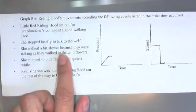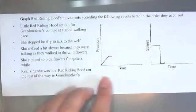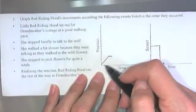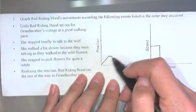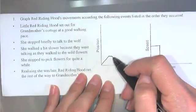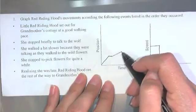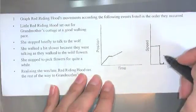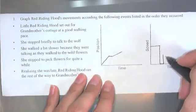She walked a bit slower because they were talking as they walked through the wildflowers. She's going to be going slower, so the angle's going to be more shallow. Now she's going slower.